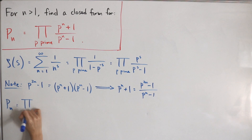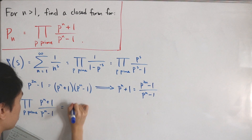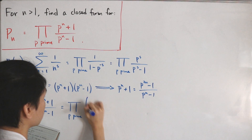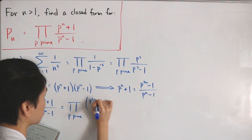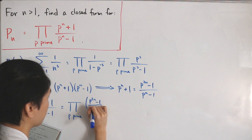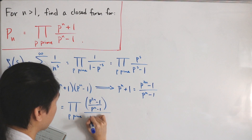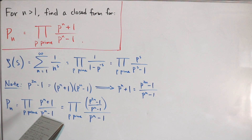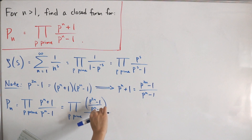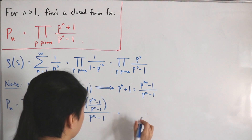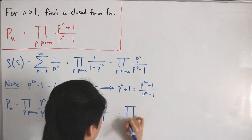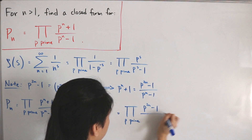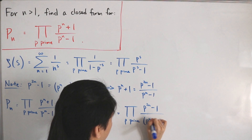Now applying that substitution, P_n — the infinite product over primes — becomes the product over primes of (p^(2n) - 1) divided by (p^n - 1), all divided by (p^n - 1). Continuing, the two factors of (p^n - 1) in the denominator combine as a square, giving the product over primes of (p^(2n) - 1) divided by (p^n - 1)².